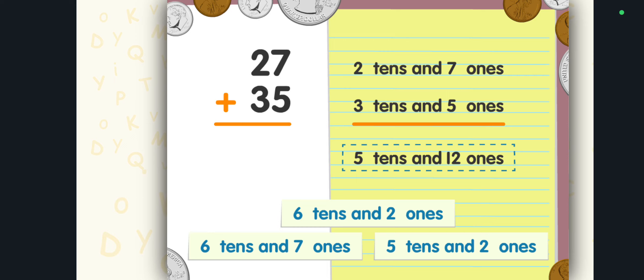Two tens and seven ones plus three tens and five ones equals five tens and twelve ones. That's right! The sum is sixty-two.